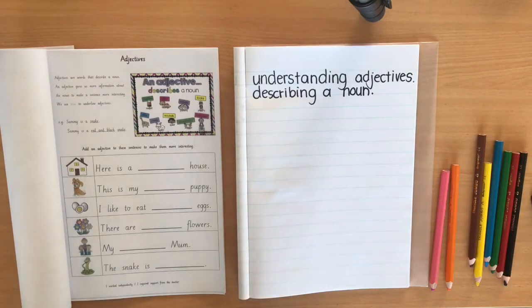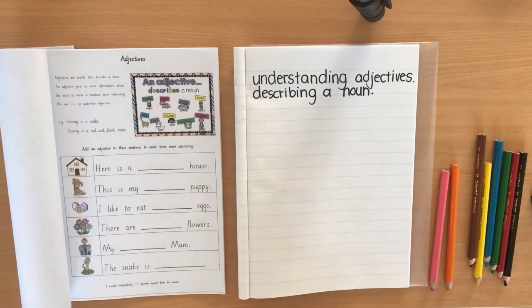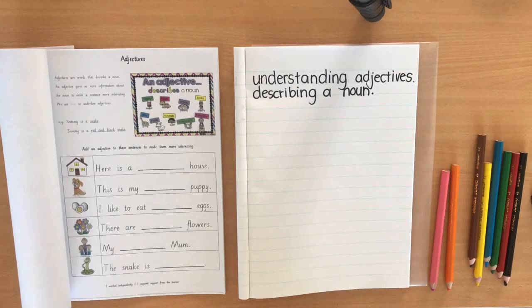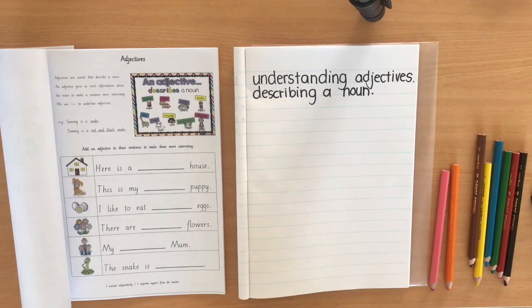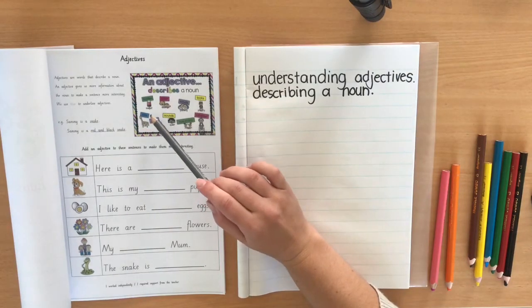Okay, here we go — adjectives! What is an adjective? Last lesson we were looking at nouns. We know that a noun is a common everyday thing that we could see or touch, and we know that a proper noun is the name of a special person, place, or thing. Adjectives are used as a way to describe the noun, or to make the noun a little bit more interesting.